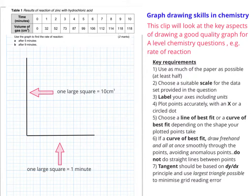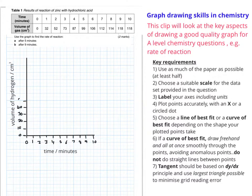If I take one large square, meaning 10 centimeters cubed on my y-axis, and one large square being one minute on my x-axis, so my y-axis can be my volume of gas and my x-axis can be time. You can see what I'm doing now is just putting in my scales on the y-axis.